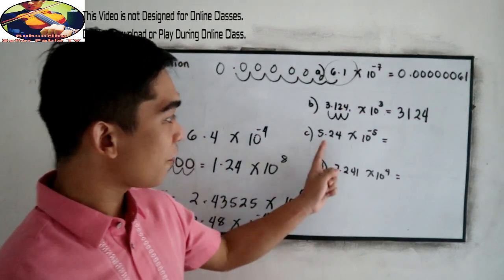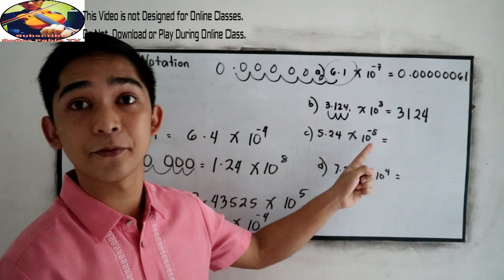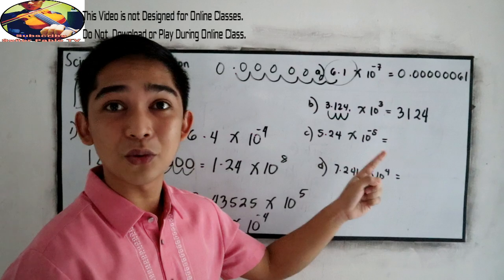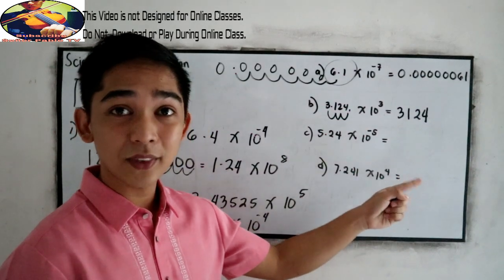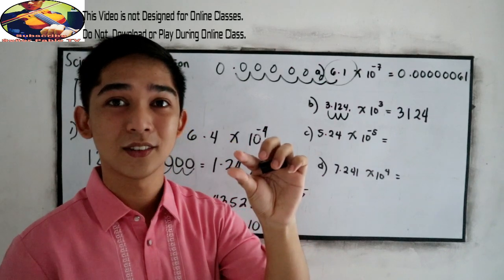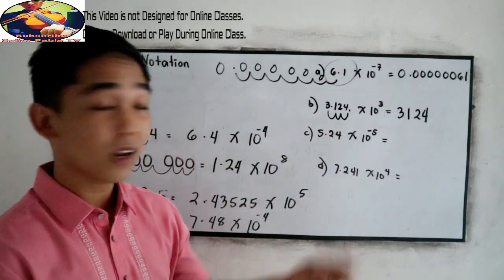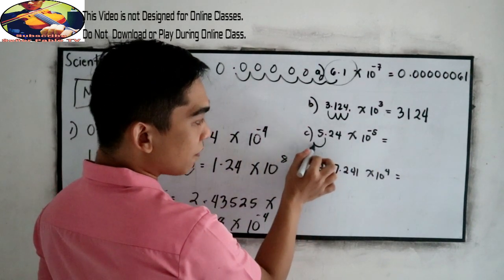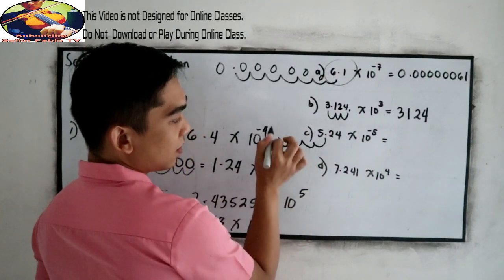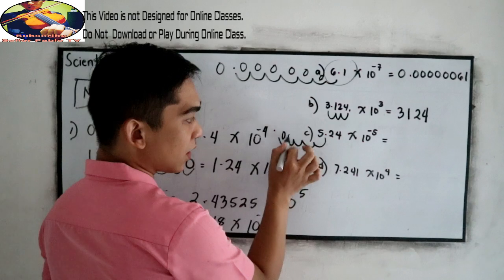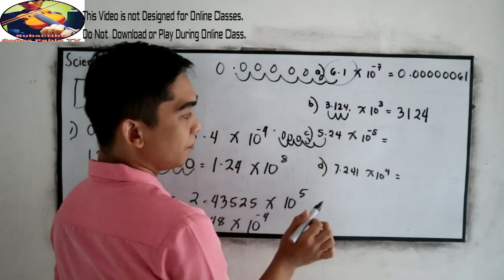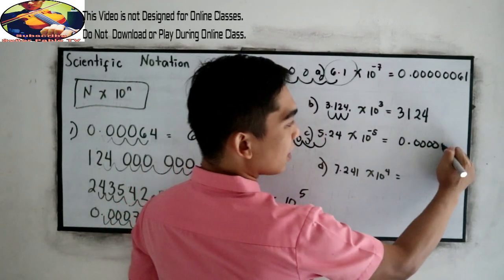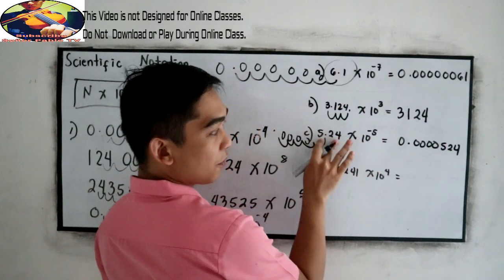Next, 5.24 times 10 raised to negative 5. Negative 5 means if we write it in decimal form, it will give us a very small value. So we move the decimal point to the left 5 times: 1, 2, 3, 4, 5. Write the decimal point and fill in zeros: 1, 2, 3, 4. So we have 0.0000524.